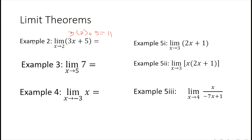That is our sample. Under example 3, we have the limit of 7 where x is approaching 5. Since 7 is a constant, the limit of a constant is still the constant, so the answer is 7. For example number 4, the limit of x where x is approaching negative 3 — since x is an identity function, the limit is negative 3.